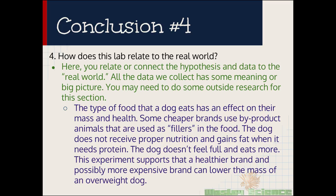All right conclusion paragraph four. How does this lab relate to the real world? This is where you connect the hypothesis and the data to the real world. Make some sort of connection. Why are we doing this lab? What's the big picture? You'll need to do some outside research. The type of food that a dog eats has an effect on their mass and health. Some cheaper brands use byproduct animals that are used as fillers in the food. The dog does not receive proper nutrition and gains fat when it needs protein. The dog doesn't feel full and eats more. This experiment supports that a healthier brand and possibly more expensive brand can lower the mass of an overweight dog. I hope you guys get the understanding of what type of research you may need to do with these labs from looking at this. I really want you to take some time and make the big picture. I see a lot of students not really do this and they lose points on this section of the lab.